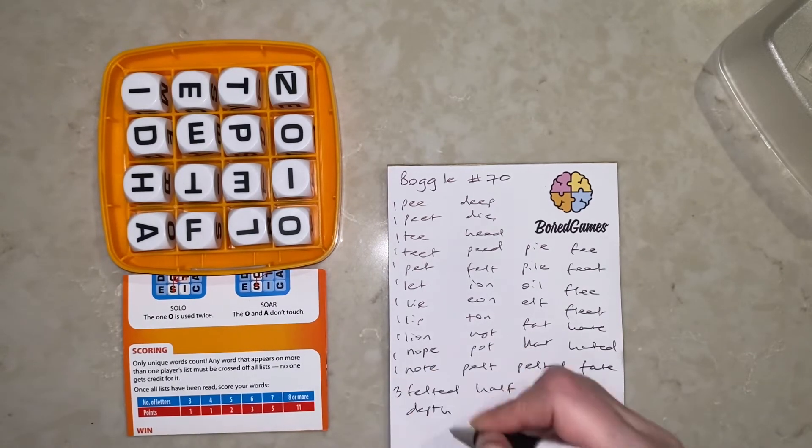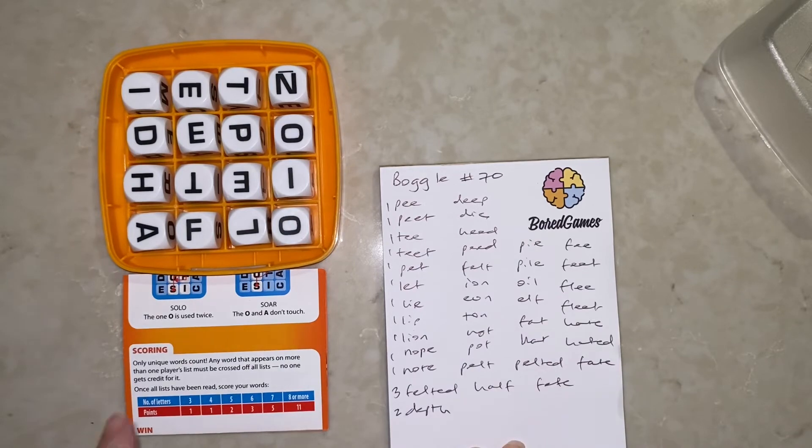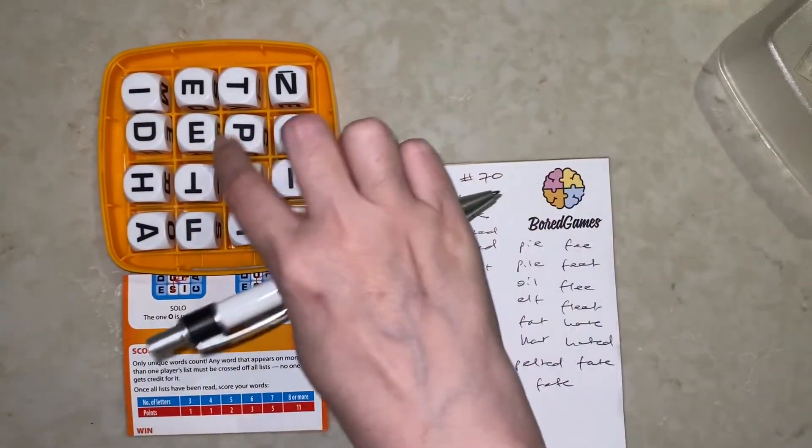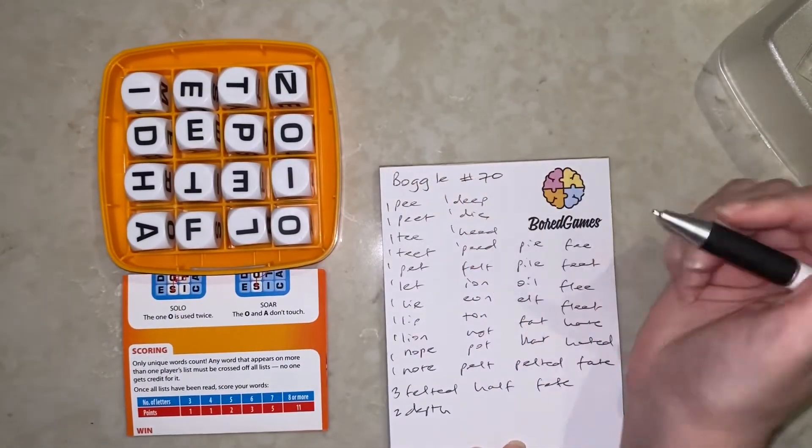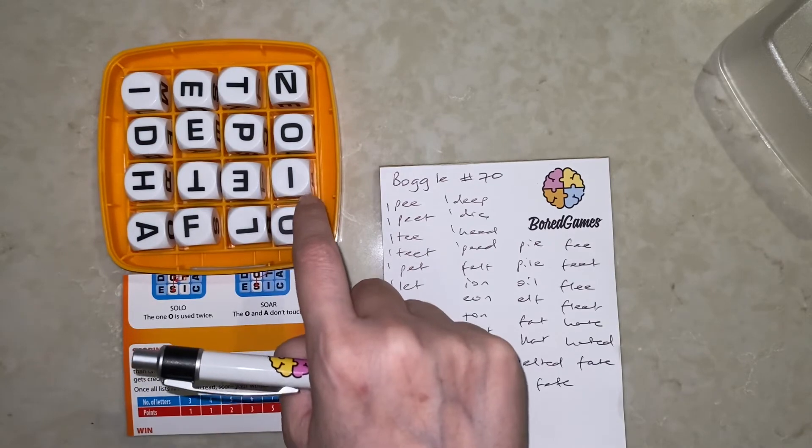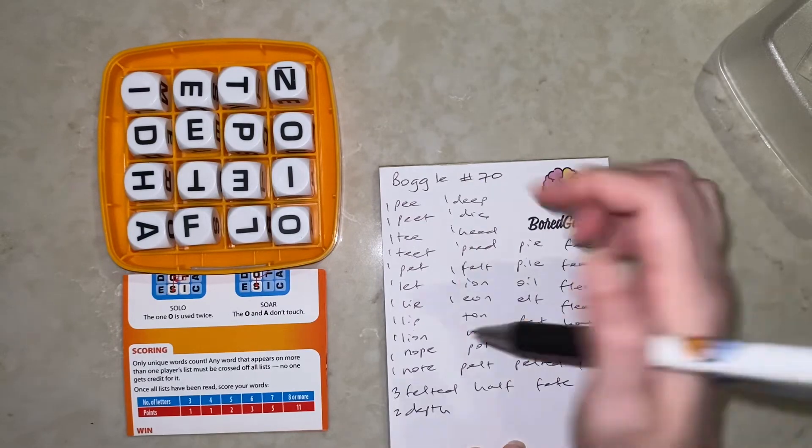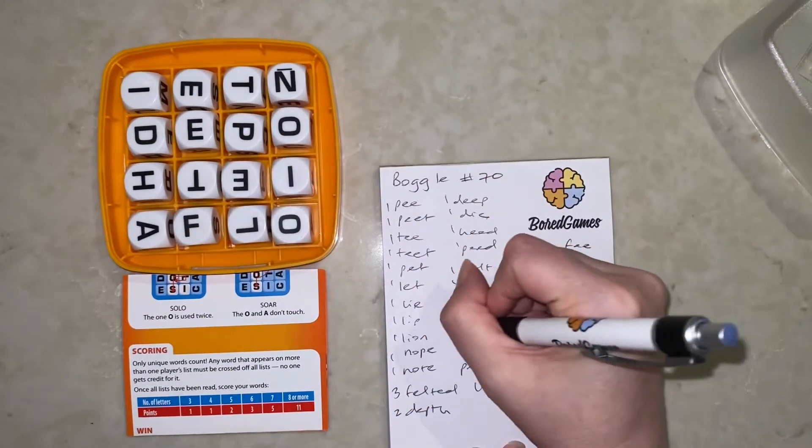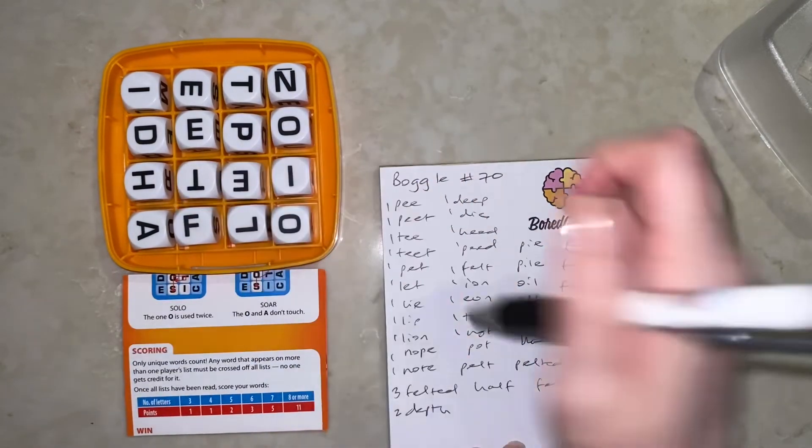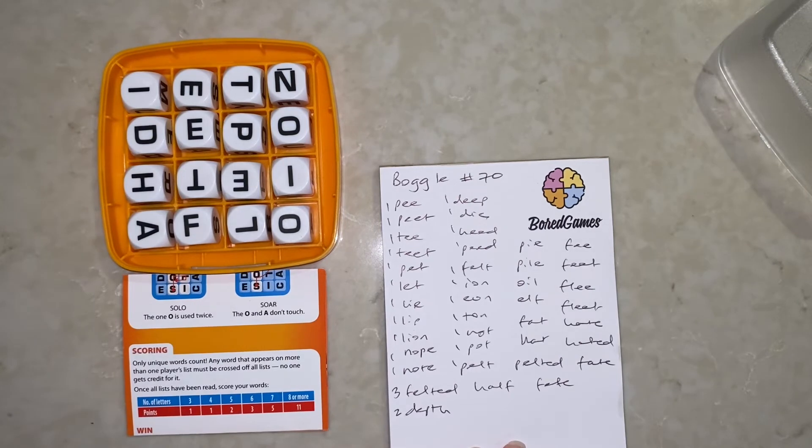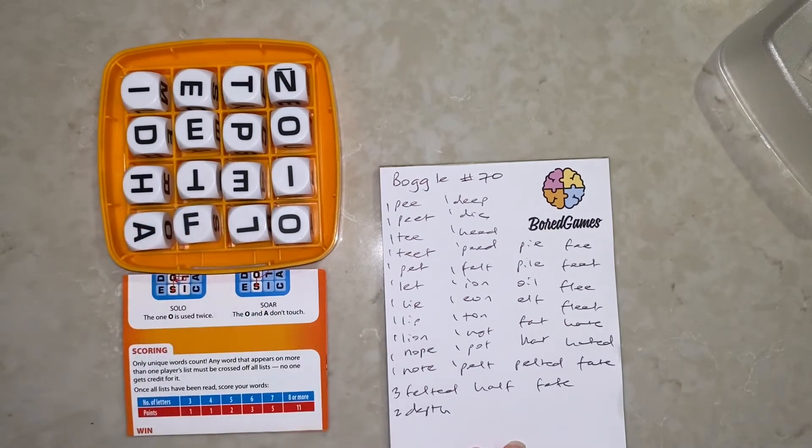Deep and die, Heed and peed, Felt and ion, Eon, Ton and knot and then the reverse, Pot and pelt, Half. H-A-L-F. I think I have teleported myself to get half. I don't think that's right. Okay.